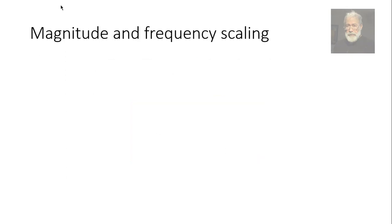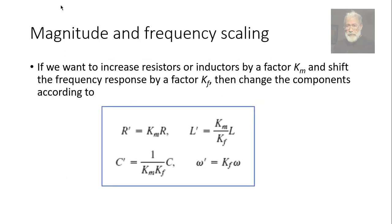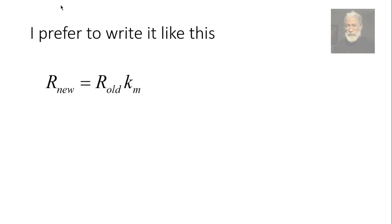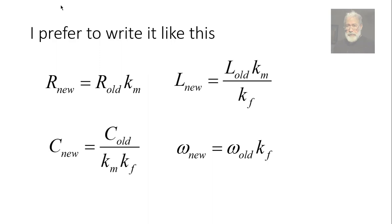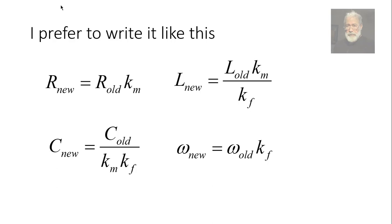We combine those two forms of scaling into these consolidated formulas. I prefer to write them like this. This is my way of writing. The new resistor is the old resistor multiplied by the magnitude coefficient km. The new frequencies for corner frequencies, for bandwidth, for half-power frequencies, is the old frequency multiplied by the frequency factor kf. And inductors and capacitors are modified this way. Easy. We need to memorize those few formulas. Not too hard.